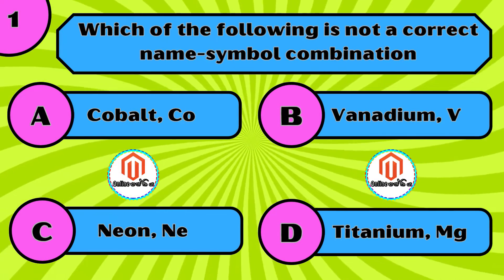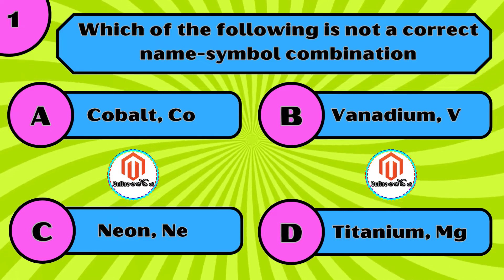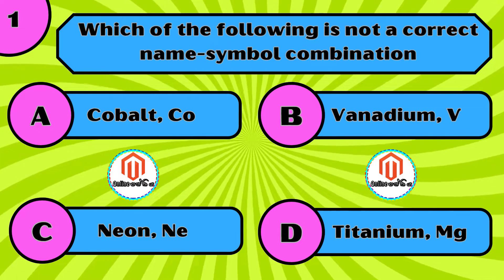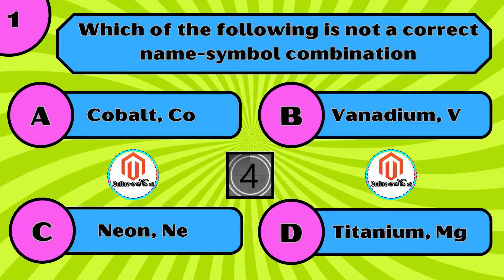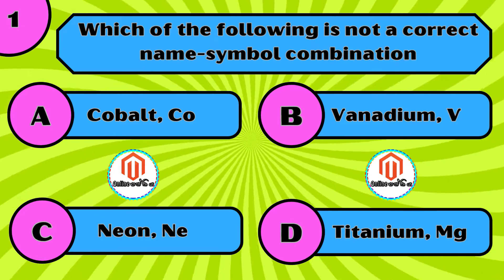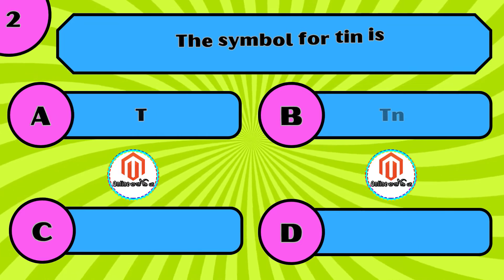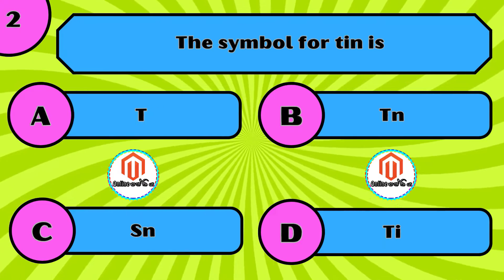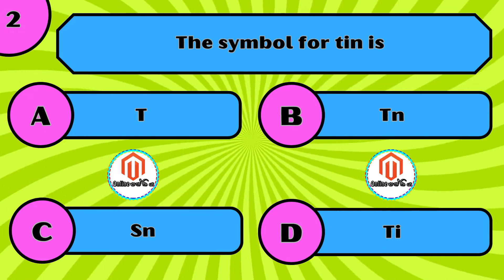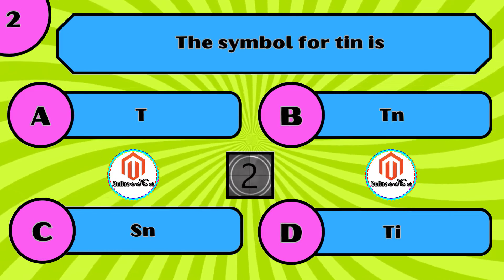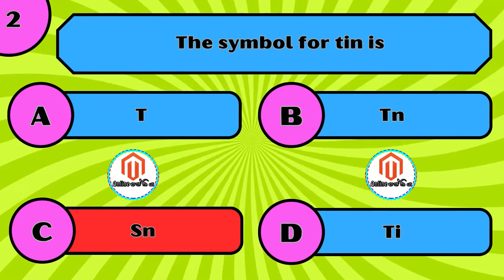Which of the following is not a correct name-symbol combination? A) cobalt Co, B) vanadium V, C) neon N, D) titanium Mg. The correct answer is D, titanium Mg. The symbol for tin is: A) Tb, B) Tt, C) Sn, D) Ti. The correct answer is C, Sn.